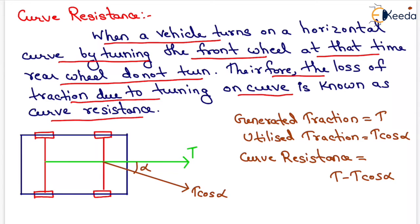Suppose that one vehicle is moving like this with a traction force of T. When the front wheel takes a turn that is like this, so that component will be equal to T cos alpha.